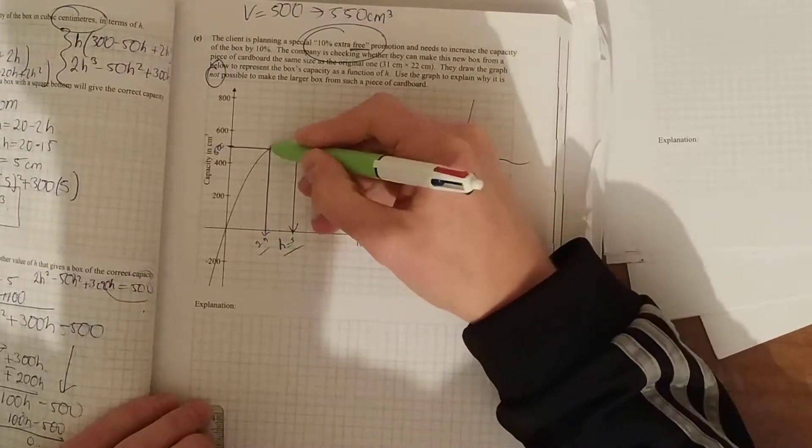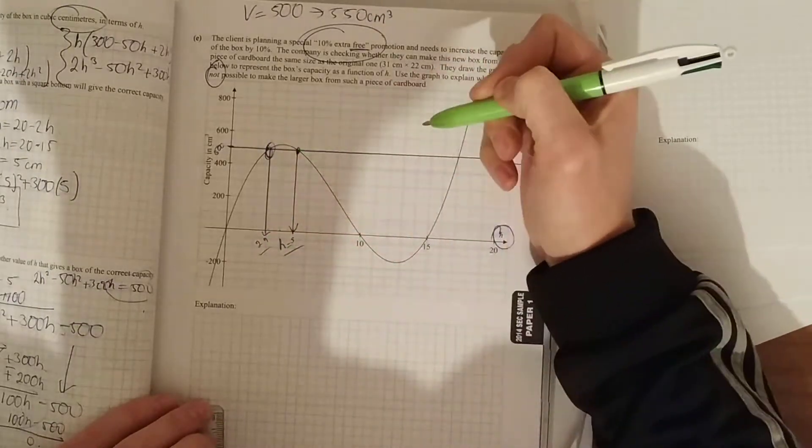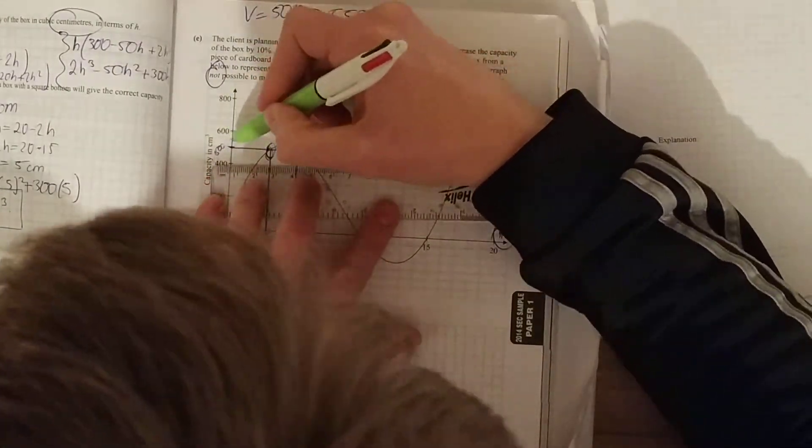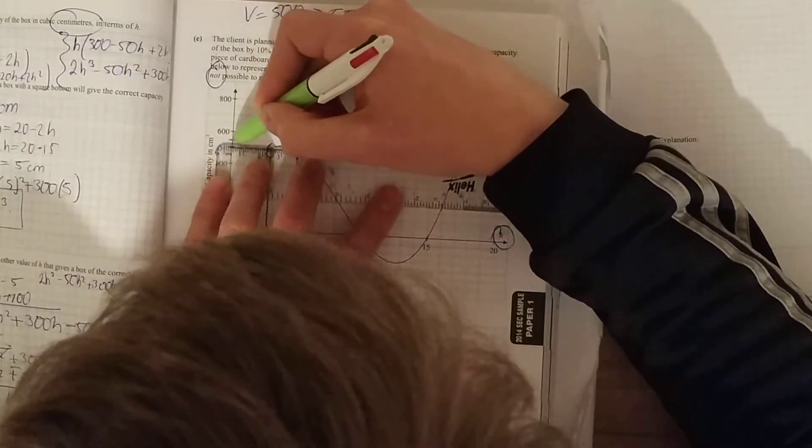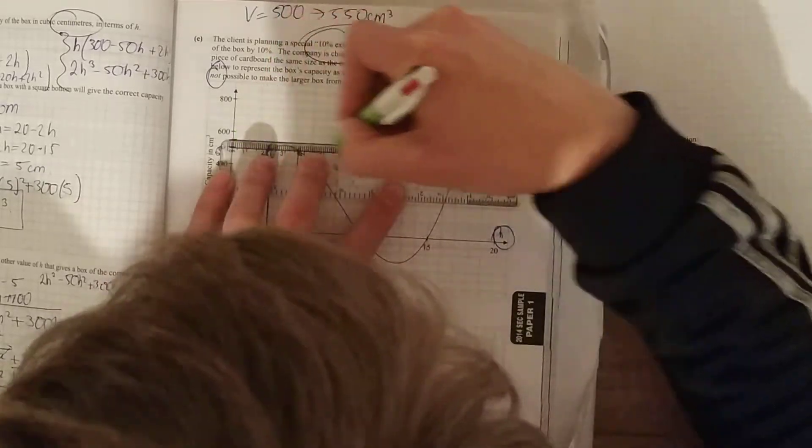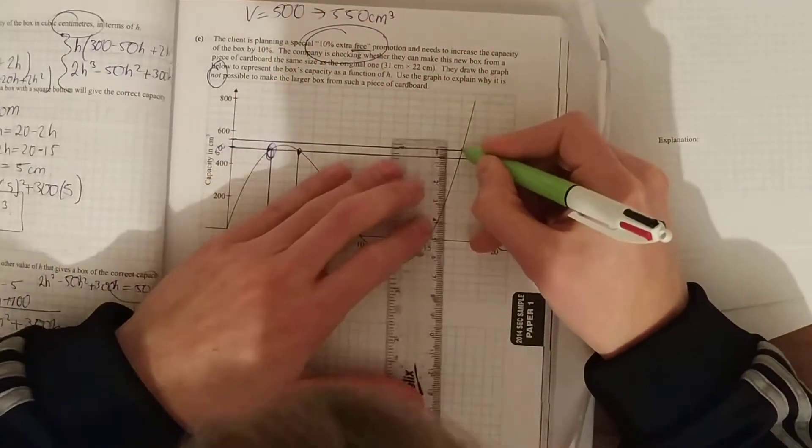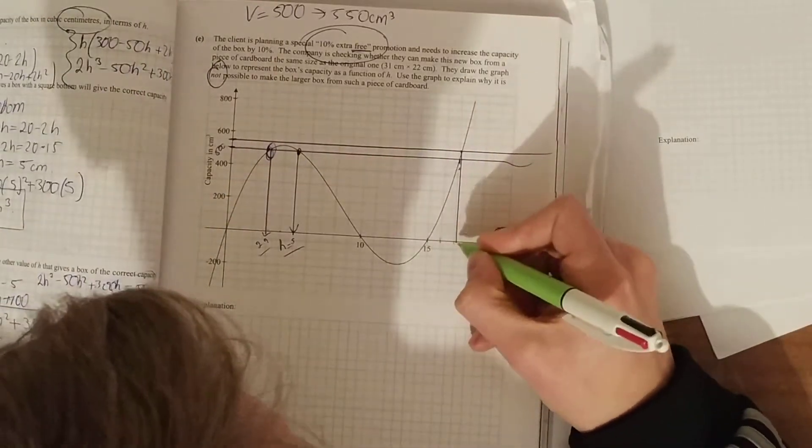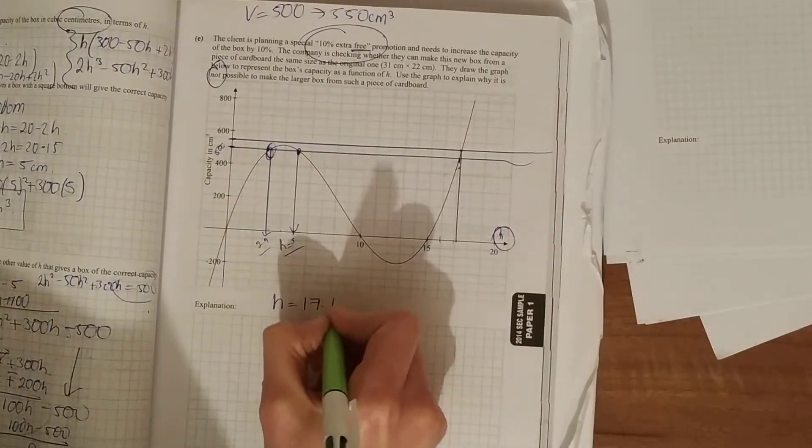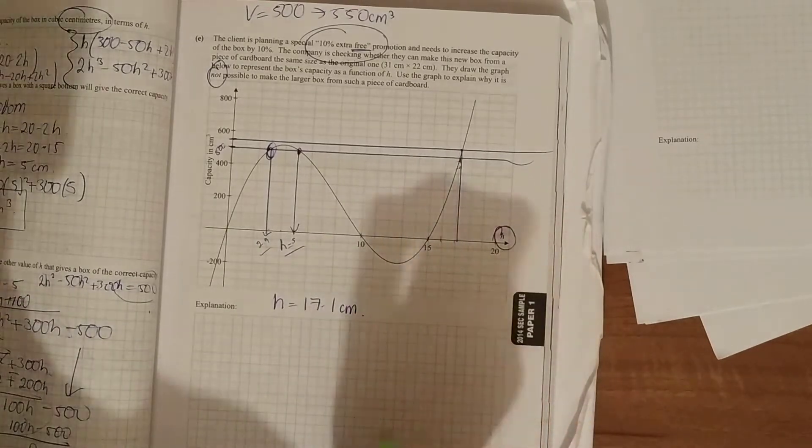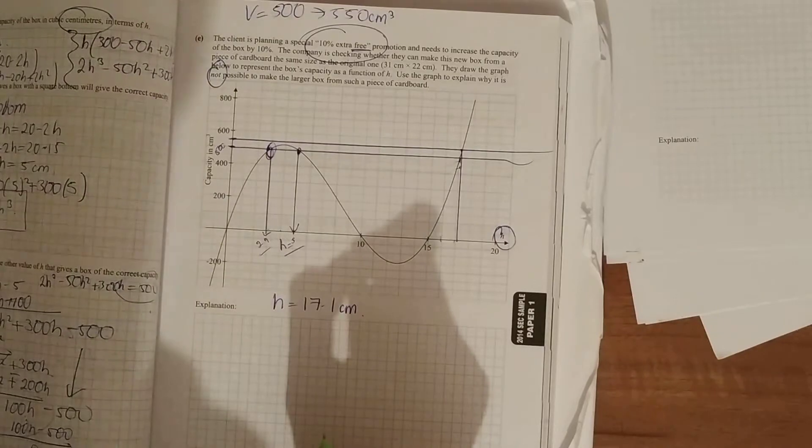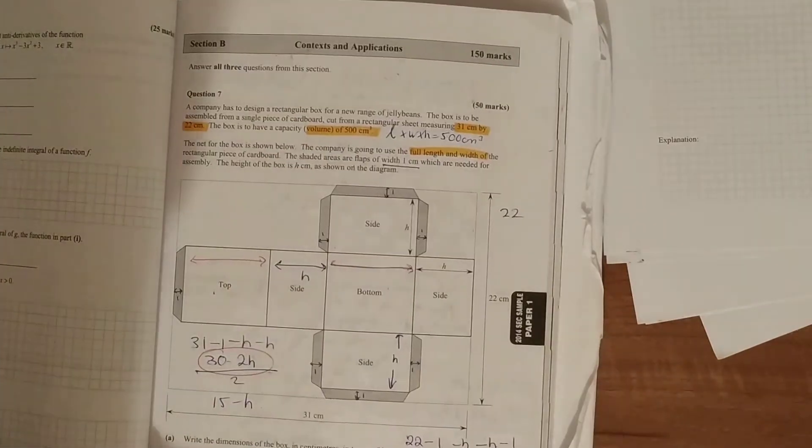So there's your two values of h that give the capacity of 500. Now you want a value of our volume of 550. So here's your 550. The only place that cuts the graph is down here, and down there you get a value of 16, 17, say 17.1 centimeters.